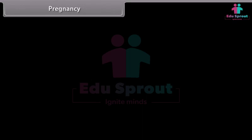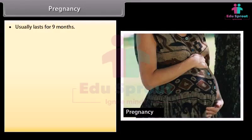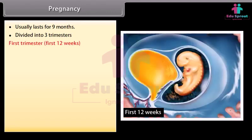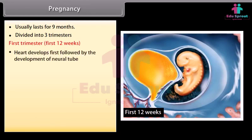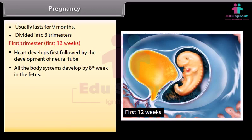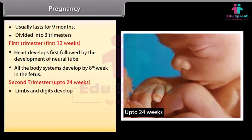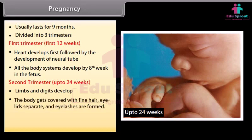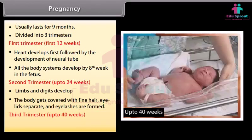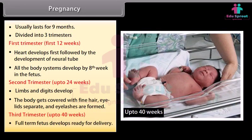Pregnancy usually lasts for 9 months and is divided into 3 trimesters. In the first trimester (first 12 weeks), the heart develops first, followed by the neural tube; all body systems develop by the 8th week. In the second trimester (up to 24 weeks), limbs and digits develop, the body gets covered with fine hair, eyelids separate, and eyelashes are formed. In the third trimester (up to 40 weeks), the full-term fetus develops and is ready for delivery.